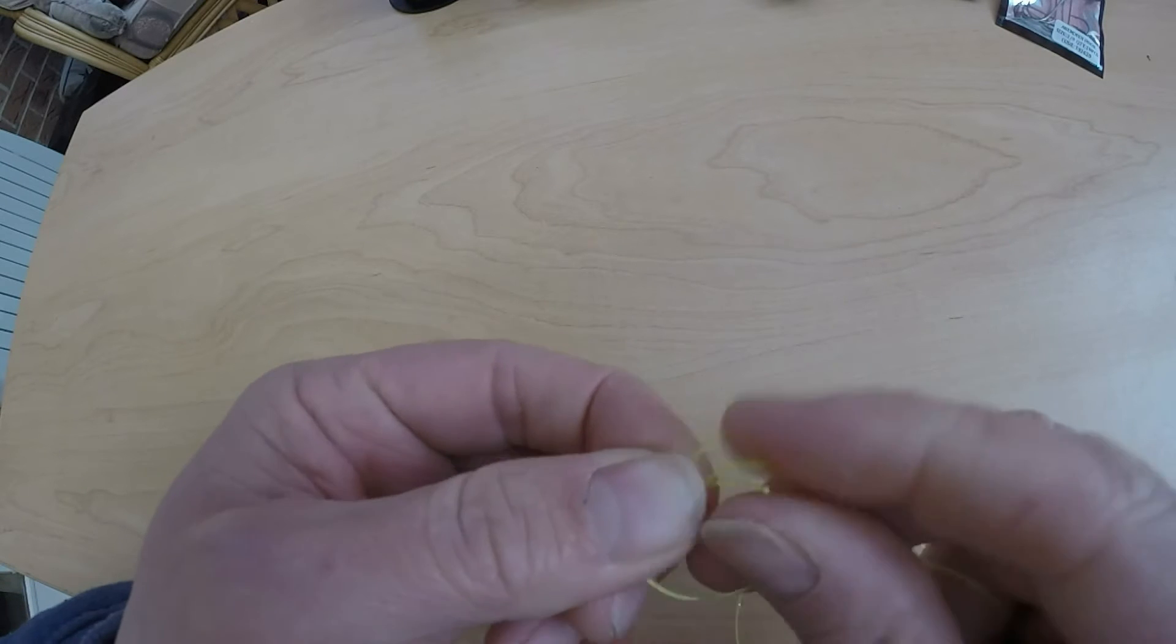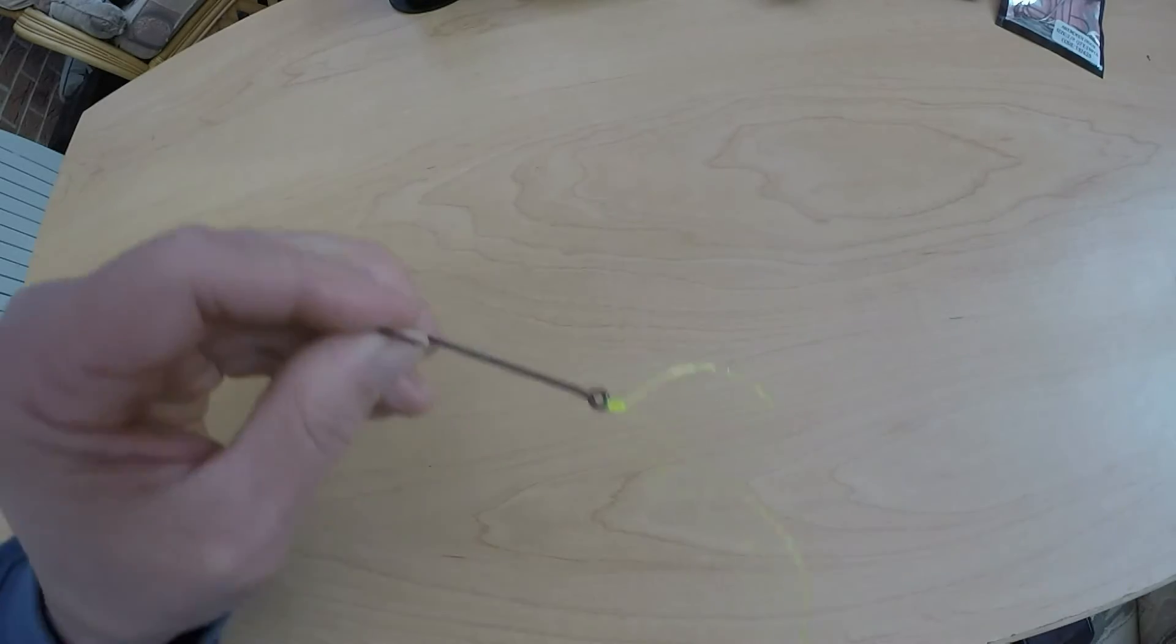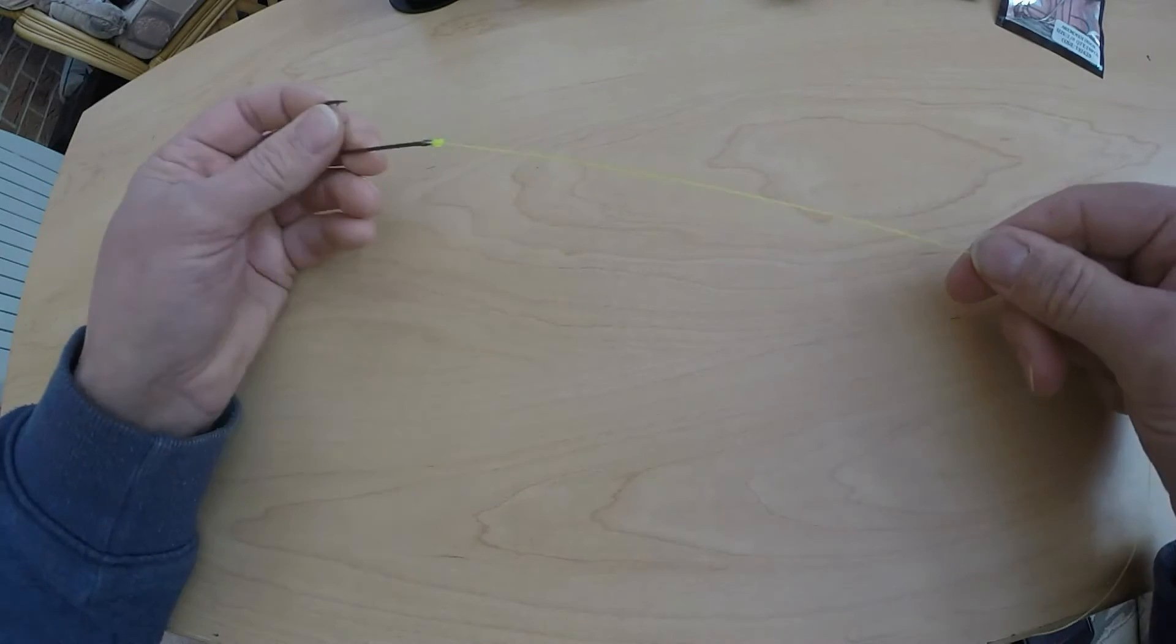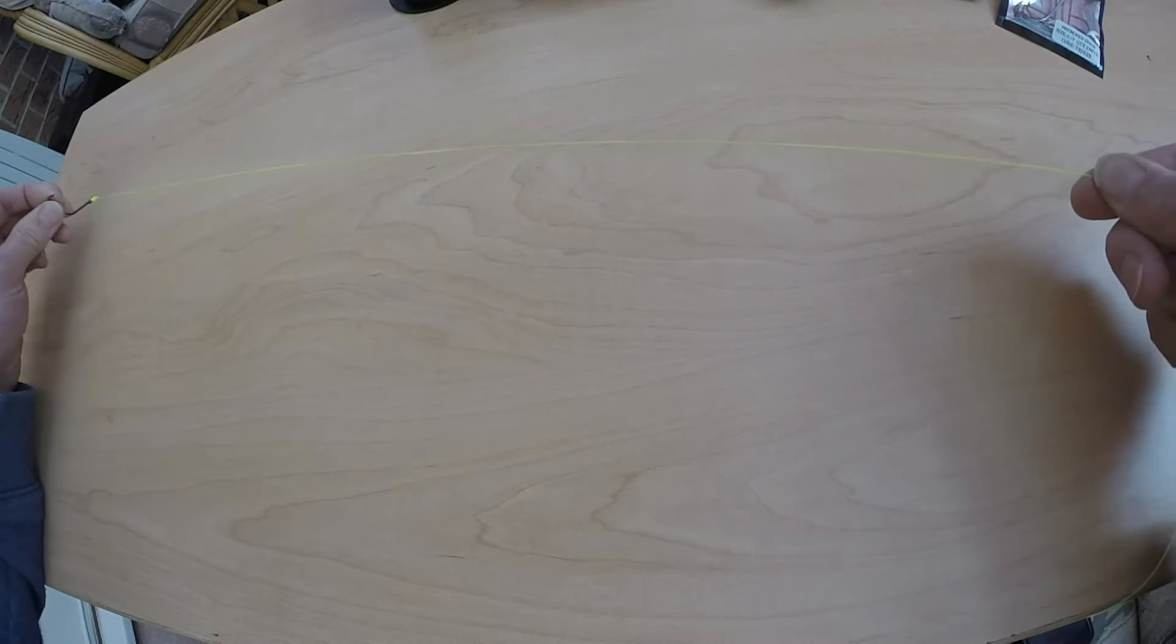I'll put a link in the description for those of you who are not sure how to tie it. Okay, just trim the tag end off and give yourself about 18 inches of line.